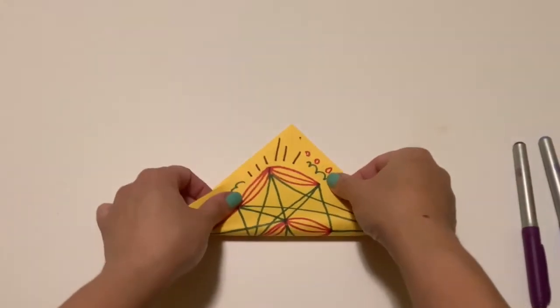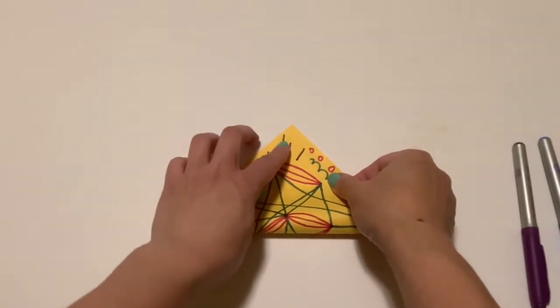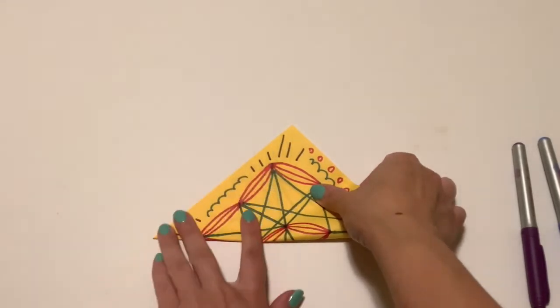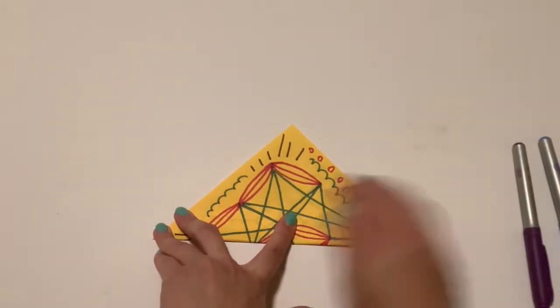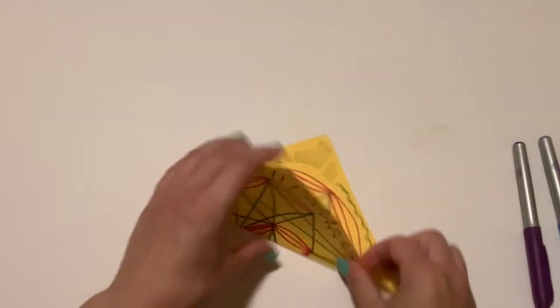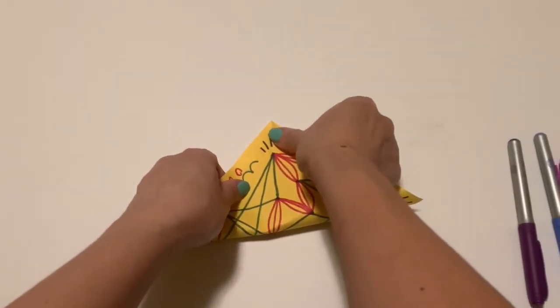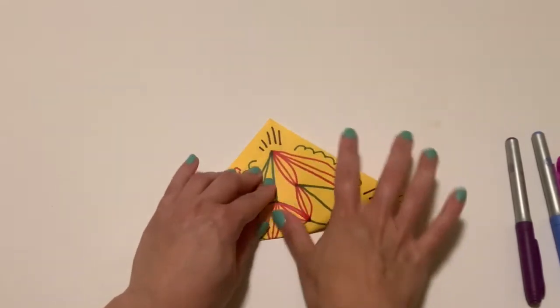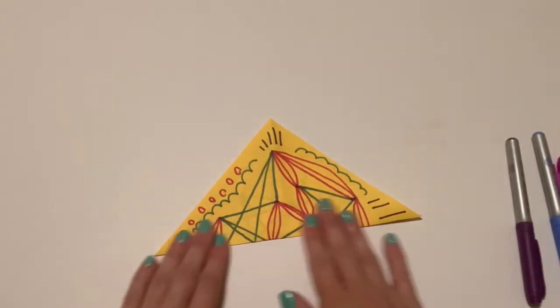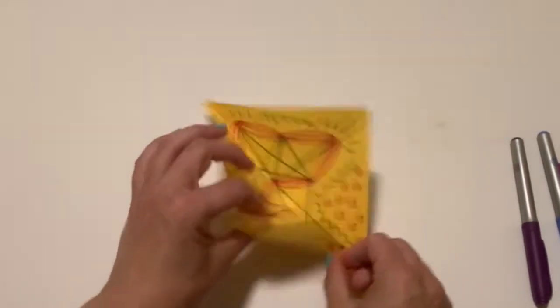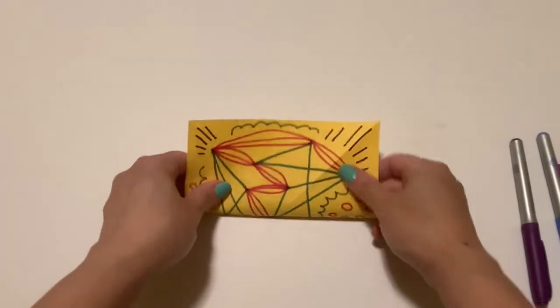Then you're going to flip your paper over and create a fold corner to corner. You're going to see that when I make my folds I make my creases very clear. Then I'm going to fold corner to corner the other way so that there's a crease on both those corners.